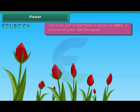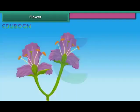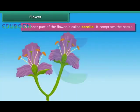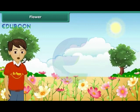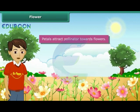The outer part of the flower is known as calyx. It consists of green leaf-like sepals. The inner part of the flower is called corolla. It comprises the petals. Different flowers have petals of different colors. Petals attract pollinators towards the flower.